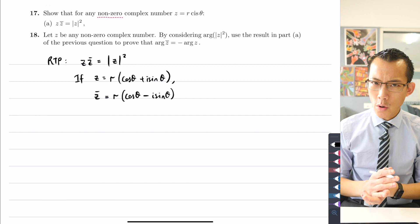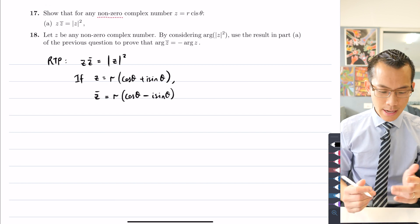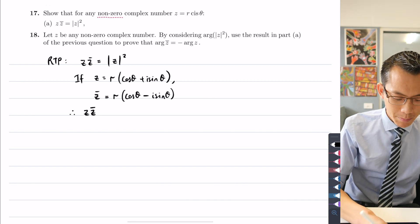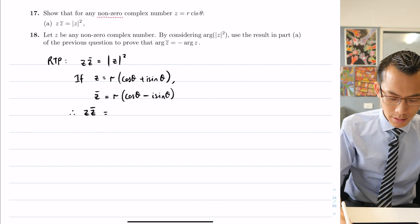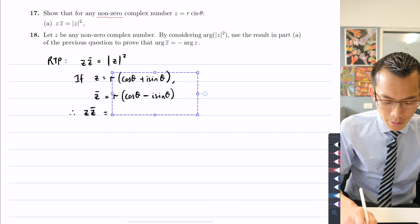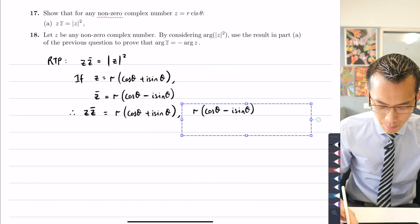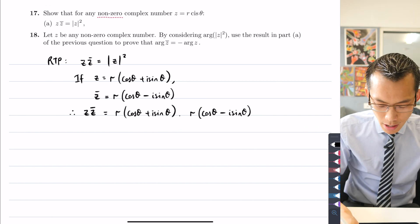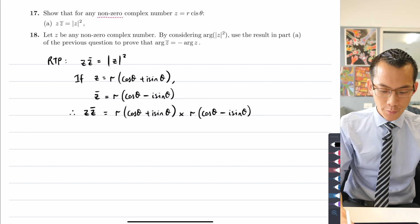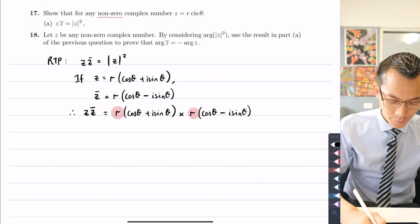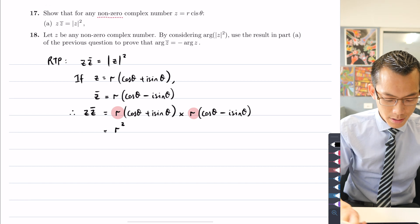So now what happens when I multiply these two things together? I would say z times its conjugate z bar equals, well let's see what happens. I'm going to be a little bit lazy and just multiply these like so. When we start to simplify this out, for starters you can see that you've got r and r just hanging out the front there, so I'll just write them as r squared.